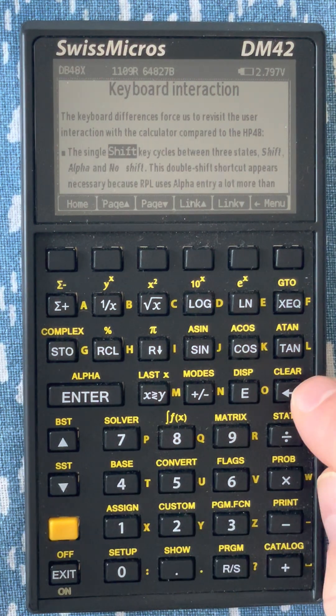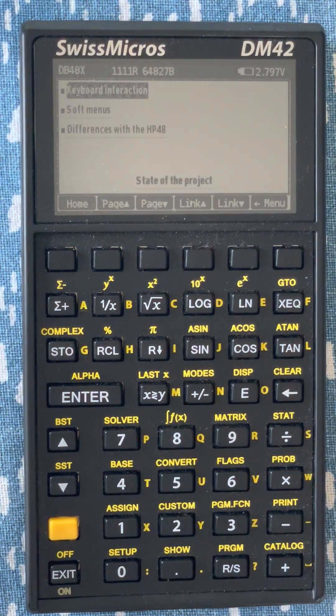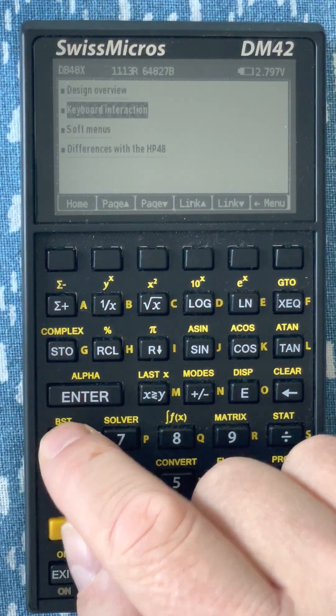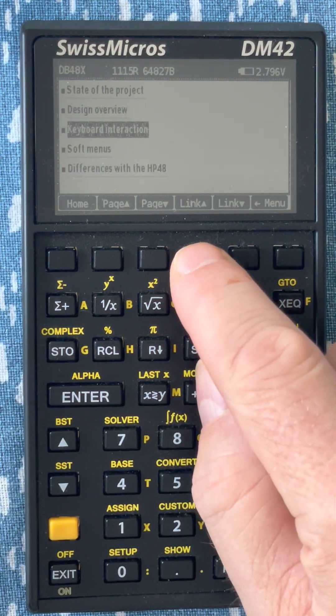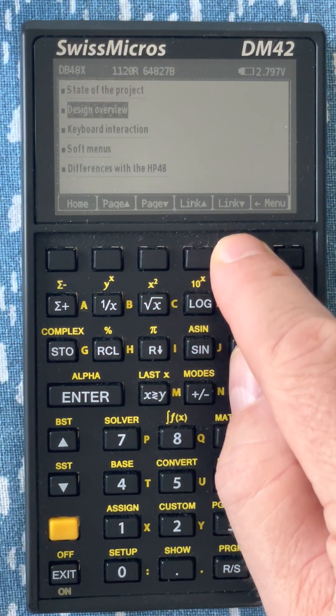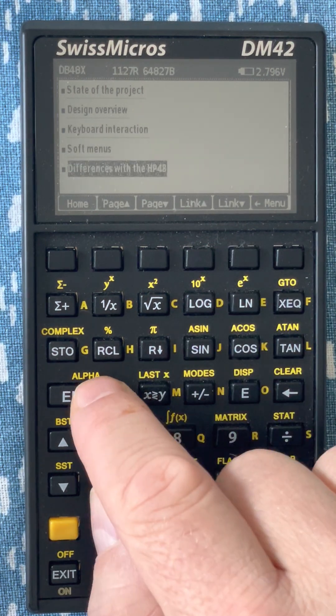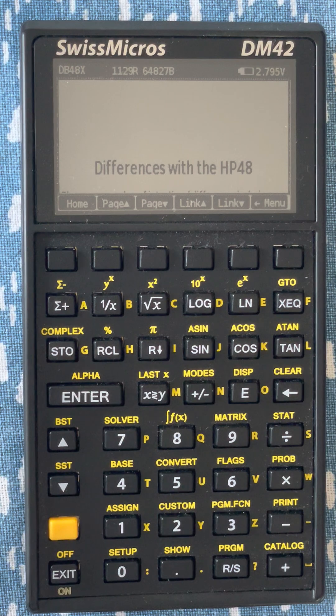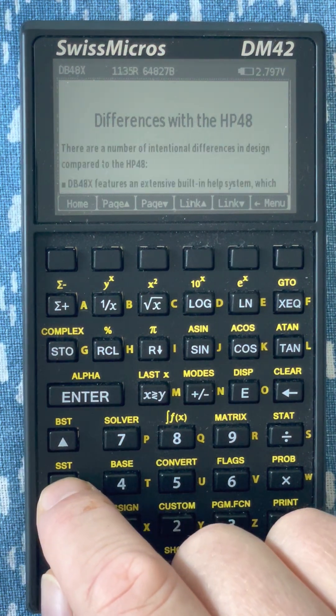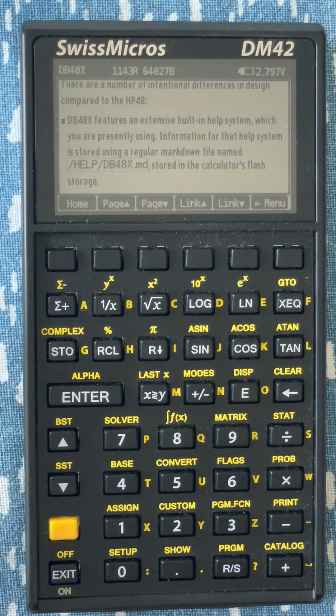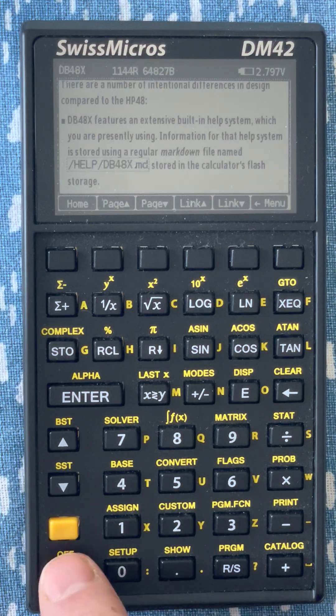And there is a history, so I can go back in history, return where I was, and follow links. Let me see the explanations about the differences with HP 48. And I can exit this help with exit.